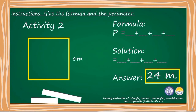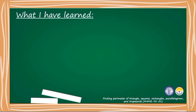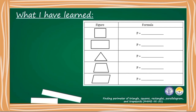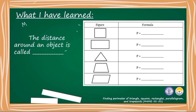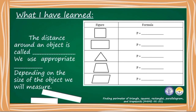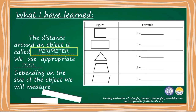The answer is 24 meters. What I have learned: On a separate paper, write the formulas in finding the perimeter of a square, rectangle, triangle, trapezoid, and a parallelogram. The distance around an object is called perimeter. We use a proper tool depending on the size of the object we will measure.